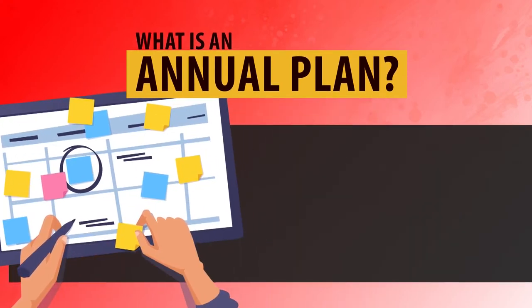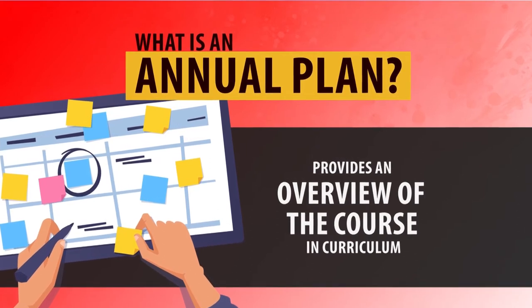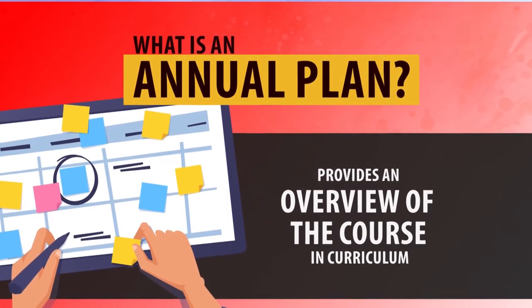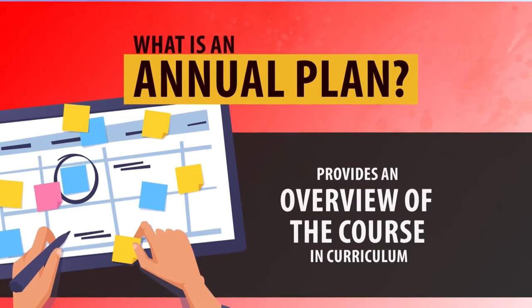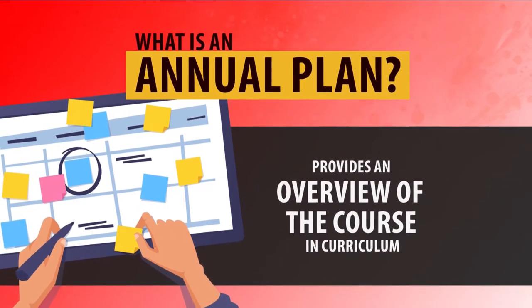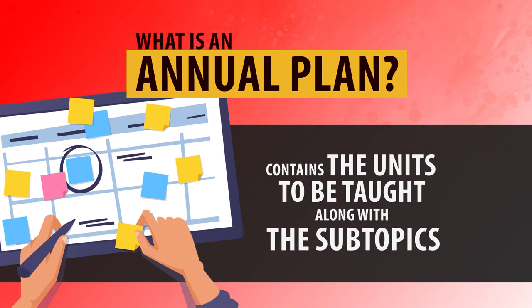What is an annual plan? An annual plan provides you an overview of the course and curriculum at the start of your session. You are generally provided the syllabus of a subject, and you are also aware of how many classes you will take throughout the session or semester. Your syllabus basically contains the units which you will be teaching during the whole year.